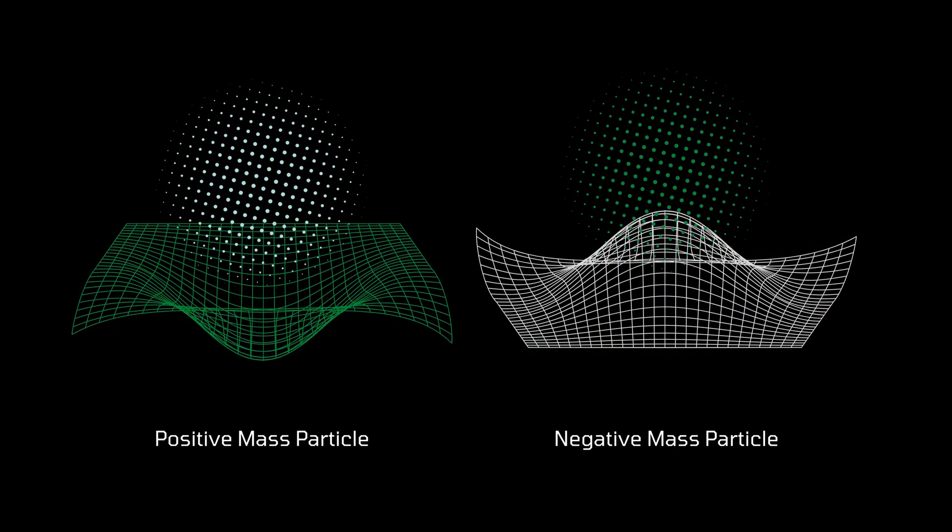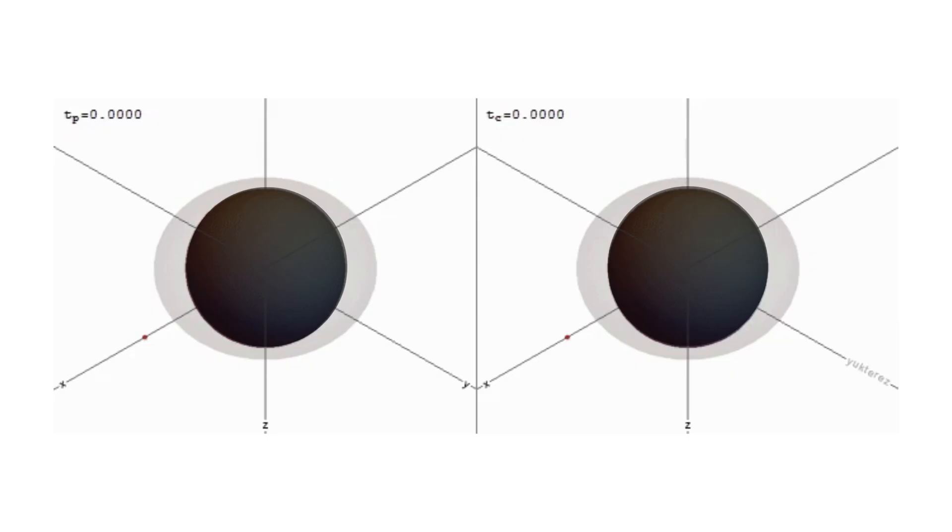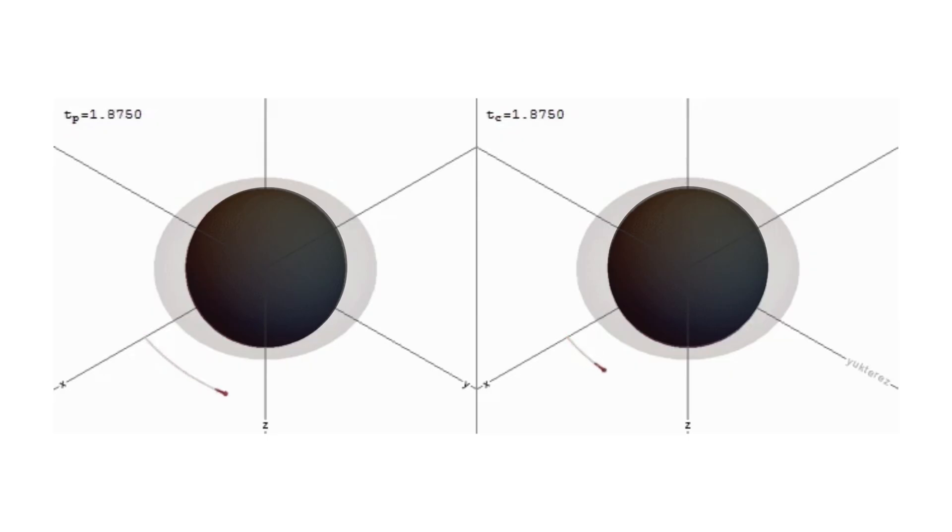Another way would be to use exotic matter such as negative mass particles to create an artificial black hole. It is also worth noting that both of these methods involve creating conditions similar to those found near the event horizon of a natural black hole. Thus, they may carry some inherent risks.